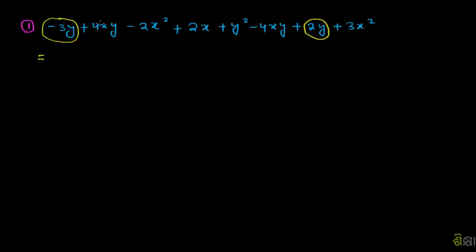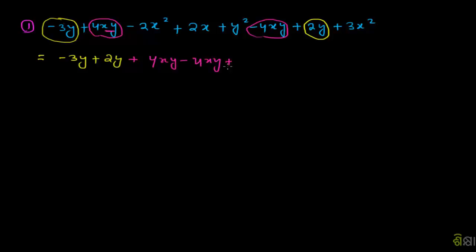This is 3y, 2y. 4xy, 4xy, xy. 4xy, 4xy, 4xy — this is minus 2x squared, s squared, 3x². Minus 2s² plus 3x².